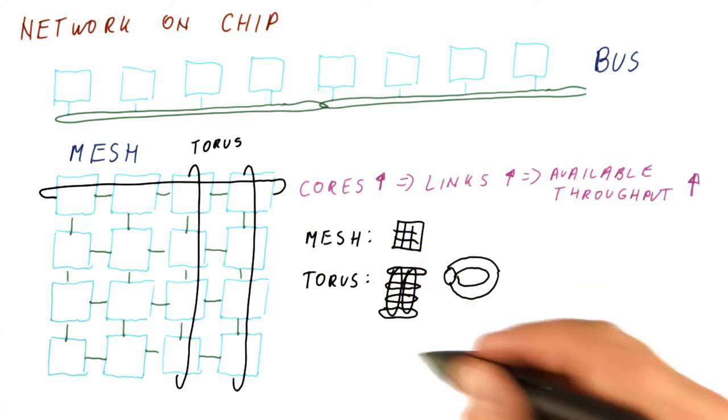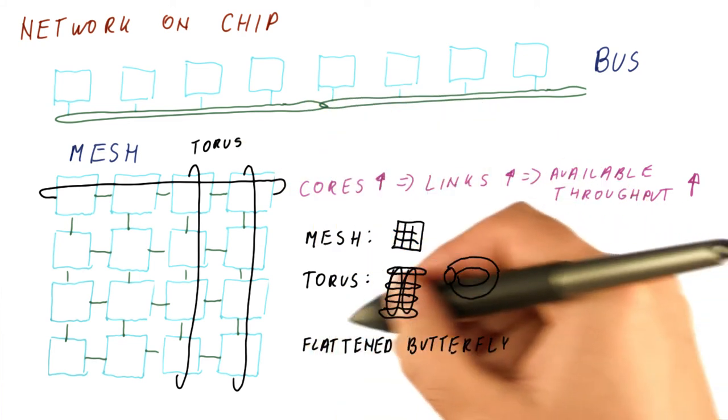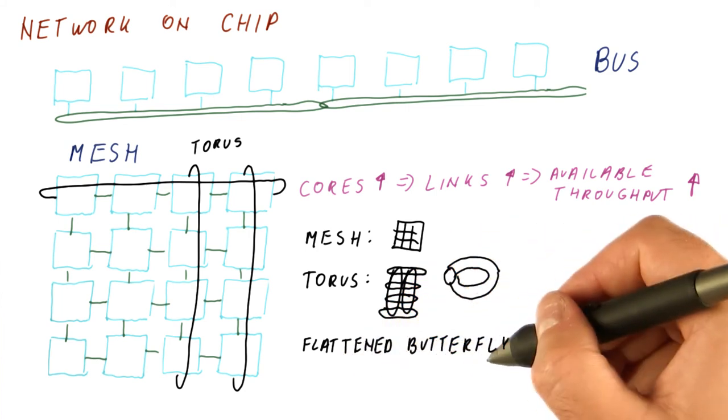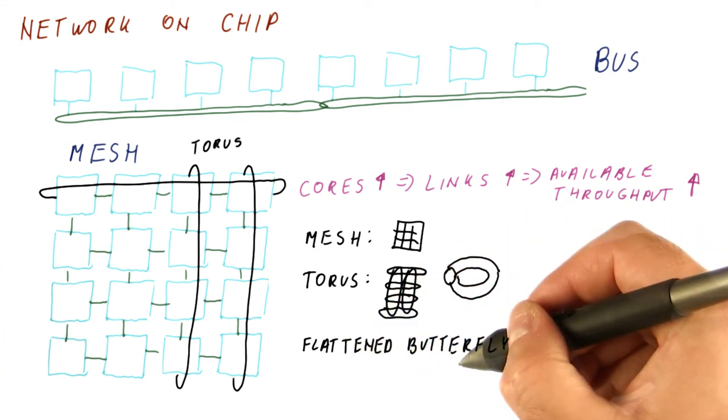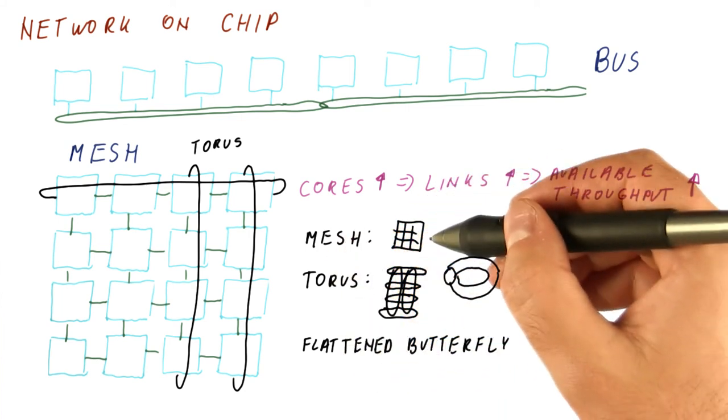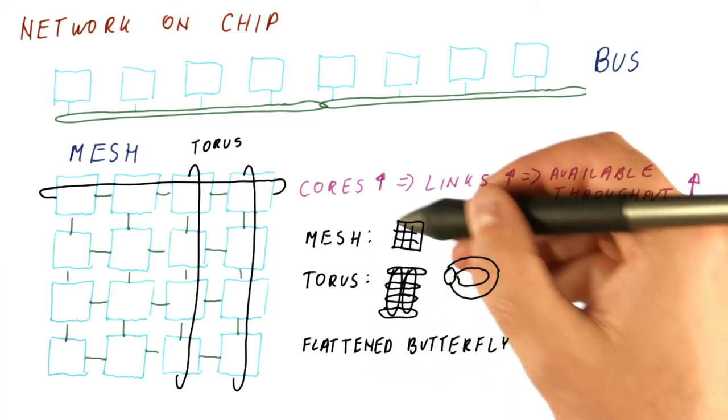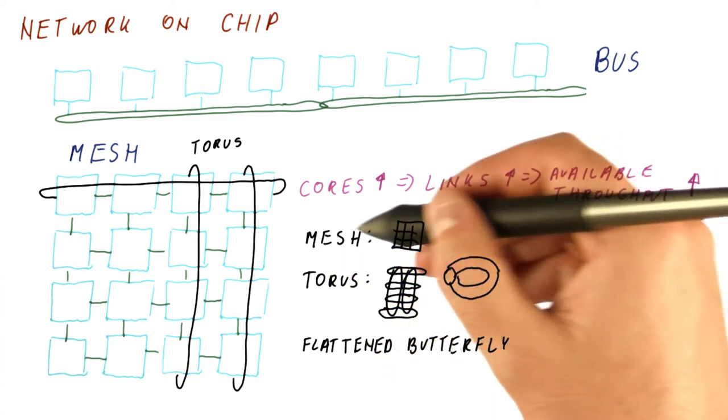And then there are even fancier networks that are still reasonably good for on-chip implementation, such as flattened butterfly. If you're interested in how these work, a very good place to start would be an advanced class on on-chip interconnects.